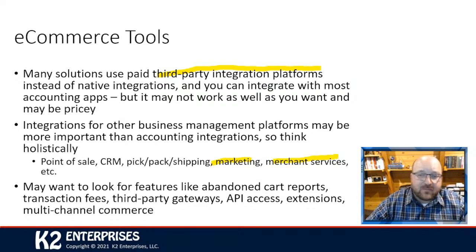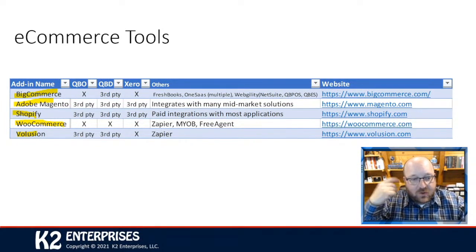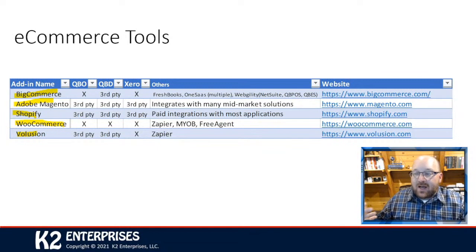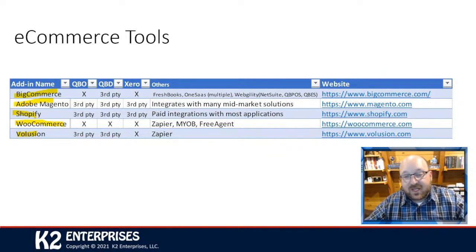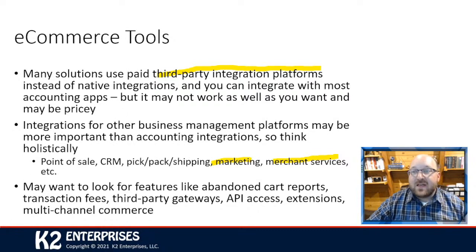All the e-commerce tools listed have their own set of limitations and are fine as long as you meet the narrow specification they're designed for. There are a couple of different categories: traditional products like a shirt or hat, services like consulting or visiting a doctor, and events with a date and time like a webinar. None of these solutions do all of those things concurrently, and if you have more than one category, you'll likely need multiple solutions.